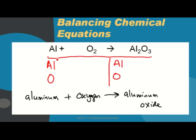And then determine how many of each element is represented in atoms. There's one aluminum and two oxygen in our reactants, two aluminum, and three oxygen in our products.